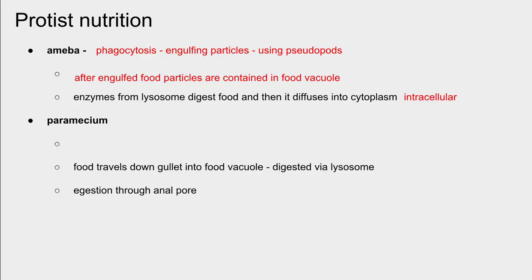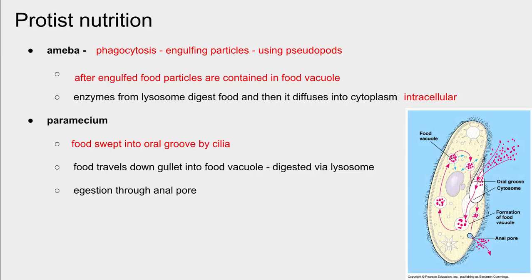Paramecium is a little different. They don't have this flexible outer layer — they have a shell around them called a pellicle. So they have special parts that allow them to ingest food. They have what we call an oral groove, sort of like their mouth, that ushers food down it using cilia. At the end of their gullet, kind of like their esophagus, a little food vacuole forms — kind of like their stomach. Then the process is the same: the food vacuole merges with lysosomes, breaks down those materials, and any undigested material leaves the paramecium through the anal pore.